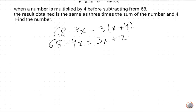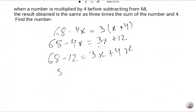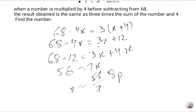Since 4x is greater than 3x, we rearrange: 68 minus 12 is equal to 3x plus 4x, so 56 is equal to 7x. Therefore x is equal to 56 divided by 7, so the answer is 8. This is the required answer. Please like, comment, and share this video.